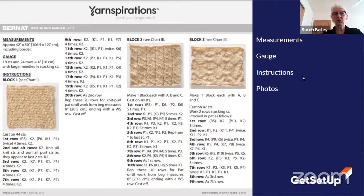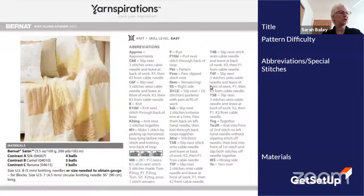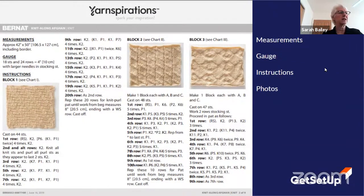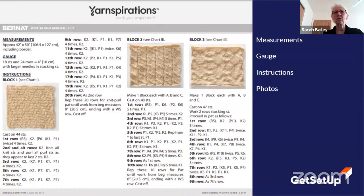Then there are your instructions, which tell you what to do row by row. And photos — this pattern gives you a photo of the finished project and a picture of every single block, which I really like. If I can't see a picture of the finished item, it's like trying to throw a dart at a target that's not on the wall. The picture helps you know if you're on the right track, so I avoid patterns that don't also include photos.